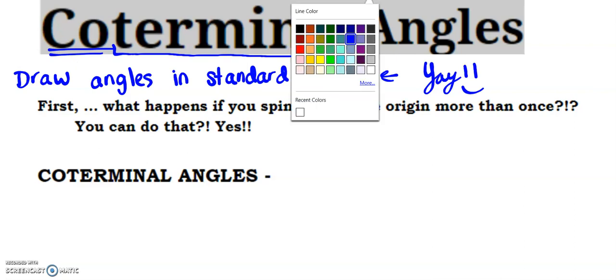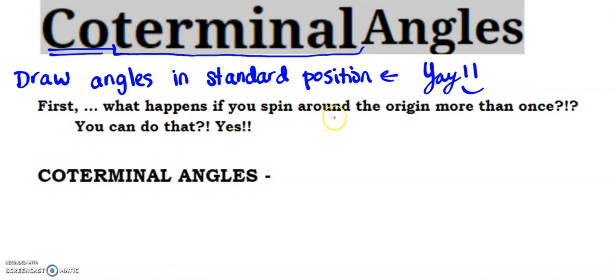So first off, let's see what this says down here. This says, first, what would happen if you spin around the origin more than once? So what I mean is, what would happen if you started at your initial side, you went all the way around, and then you went a little bit extra? What would happen? Can you even do that? Well, the answer is yes, you totally can do that. And we're going to talk about what that means today.